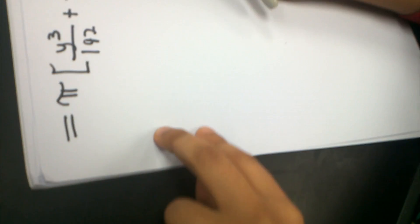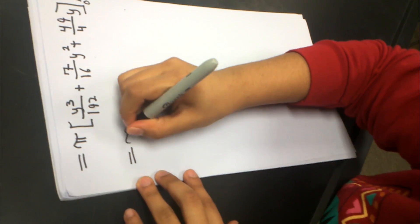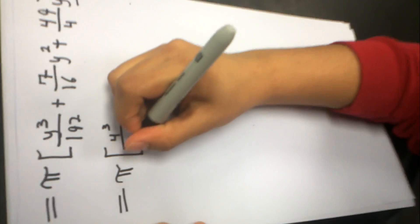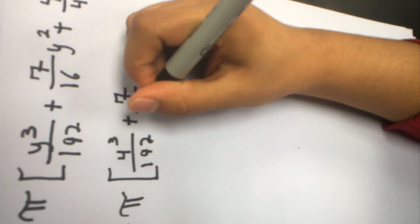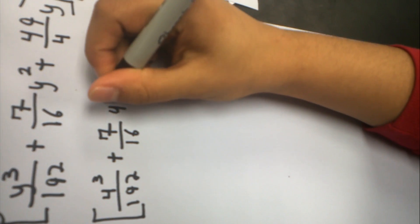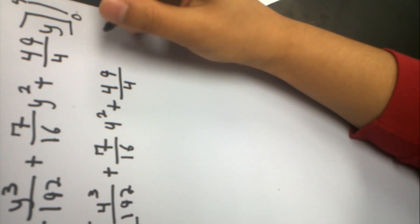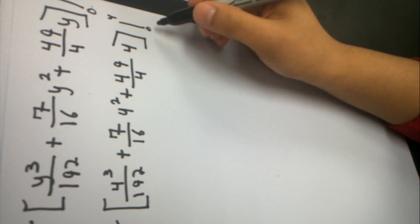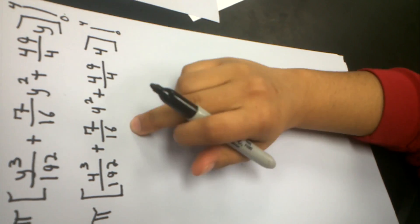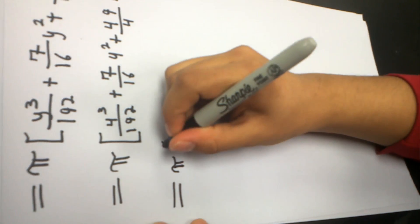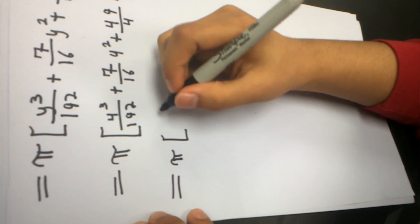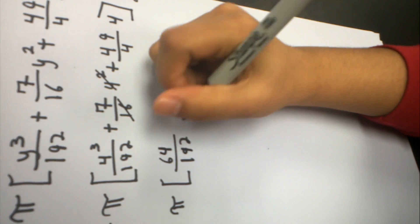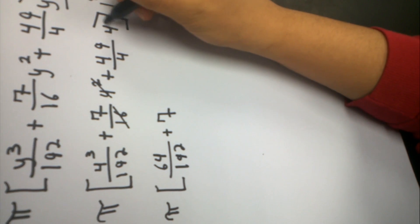Now I'm going to plug in for 0 and 4. I've got to bring π down because it's still there. I plug in 4³/192 plus 7/16 times 4² plus 49/4 times 4. This is from 0 to 4. I'm not going to write down 0 because obviously if you plug in for 0, the whole equation will equal 0, so we're only going to plug in for 4 here. Let's plug those in. So 4³ is equal to 64/192. 4² is 16, so this and this will cancel out, and it's just going to be 7. So this is plus 7. Again here, 4 and 4 cancel out, so this is just going to be 49.